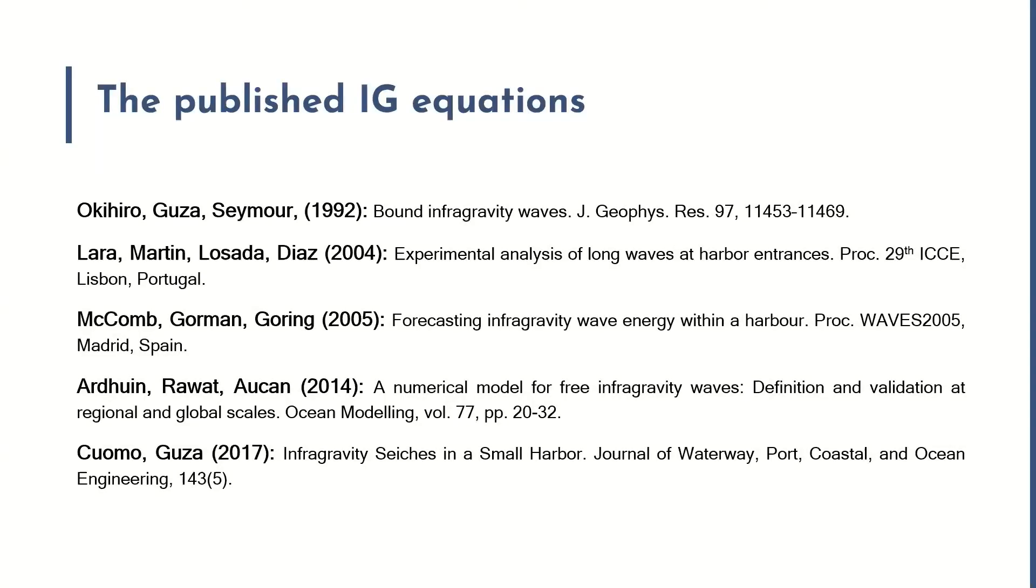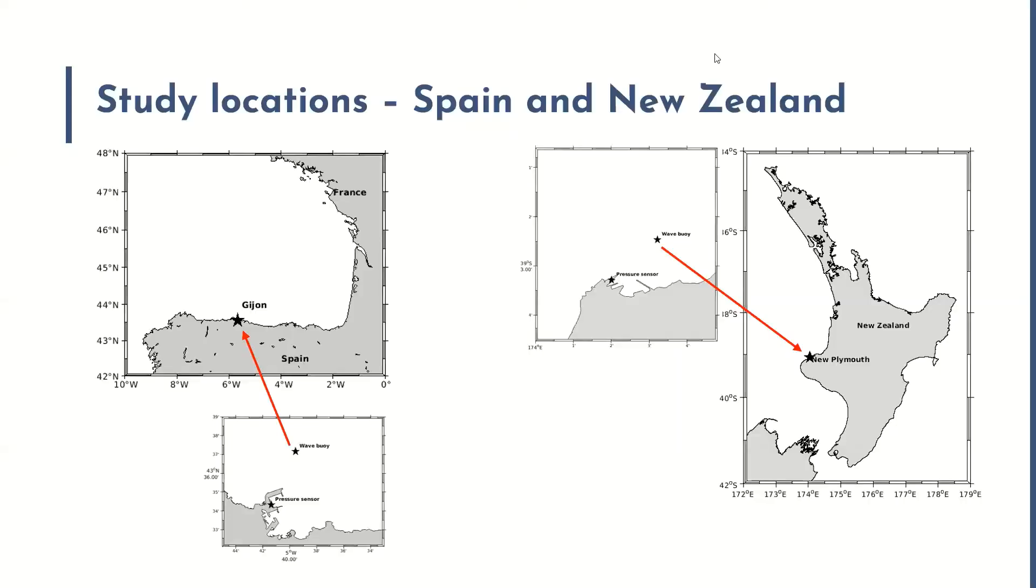Here are the published infragravity equations that we'll be using. The first one, the method of Okihiro, applies the full analytical solution to the infragravity wave spectrum to resolve a long wave boundary condition outside the harbor. It's deployed here with further coefficients to more fully describe the transformation into the berth. Here are the study locations in Spain and in New Zealand. These are ports of Gihon and port of Taranaki.